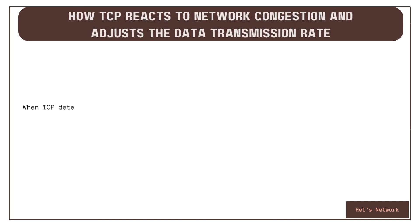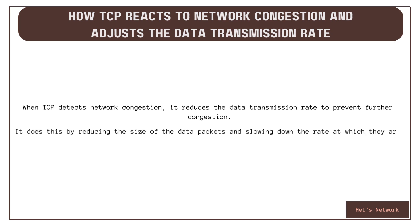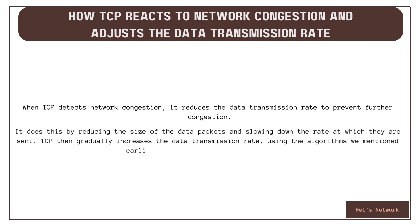When TCP detects network congestion, it reduces the data transmission rate to prevent further congestion. It does this by reducing the size of the data packets and slowing down the rate at which they are sent. TCP then gradually increases the data transmission rate using the algorithms mentioned earlier, until it reaches an optimal level.